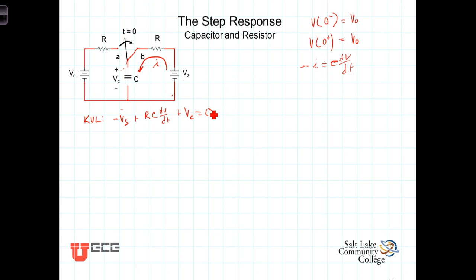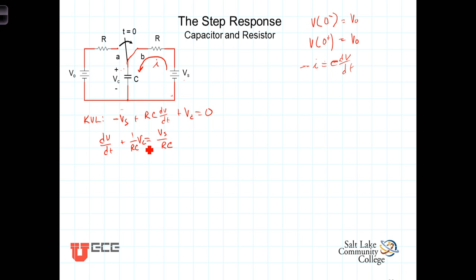Now let's add V sub S to both sides and divide both sides by R times C. So we bring V sub S to the other side and divide by RC, leaving us with dV/dt plus 1 over RC times V sub C, is equal to V sub S over RC.